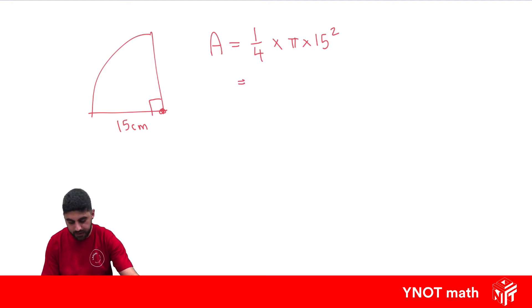you can just use a quarter times pi times the radius squared. And that's going to, if we put all that in the calculator, give us 176.7 centimetres squared to one decimal place.